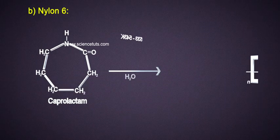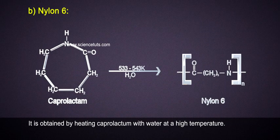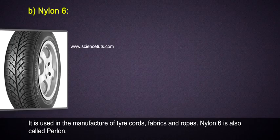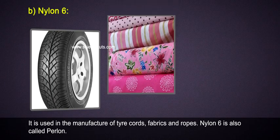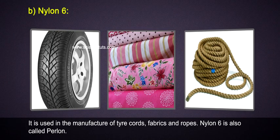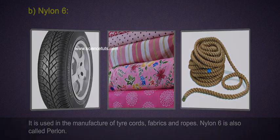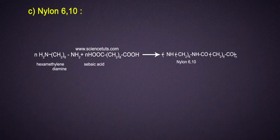Nylon 6: It is obtained by heating caprolactam with water at a high temperature. It is used in the manufacture of tire cords, fabrics, and ropes. Nylon 6 is also called perillon.